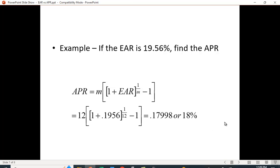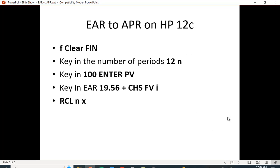Let's try this on the 12C calculator. Again, we're going to clear our financial functions. We're going to put in the number of compounding periods, we put in key in 100 ENTER PV, and then we put in the EAR 19.56 plus change the sign FV I, and then recall N and times.